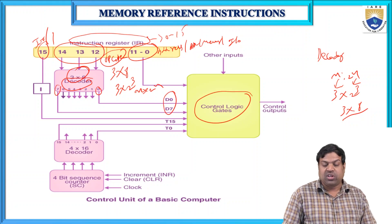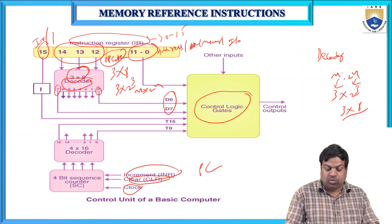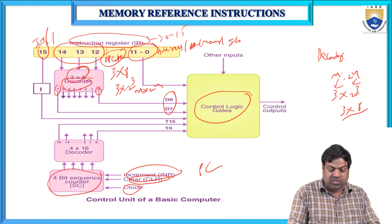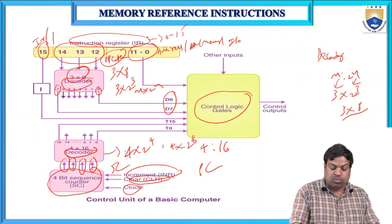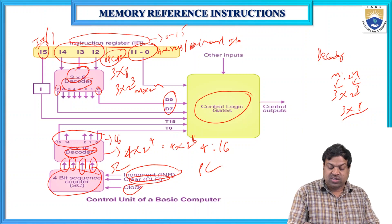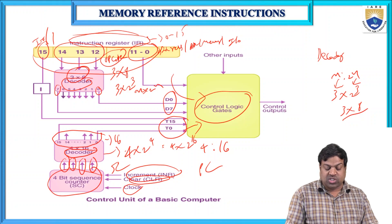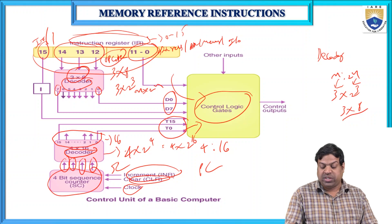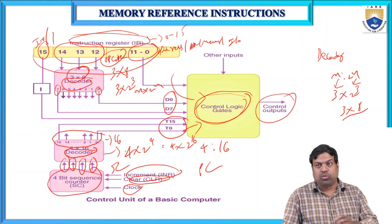Outputs D0 to D7 of the 3-to-8 decoder are connected to control logic gates. A 4-bit sequence counter feeds a 4-to-16 decoder (4 input lines → 2^4 = 16 outputs, T0 to T15), also connected to control logic. The decoder outputs D0–D7 connect to the instruction register, and T0–T15 connect from the program counter to control logic. The final output from control logic is a single control output.